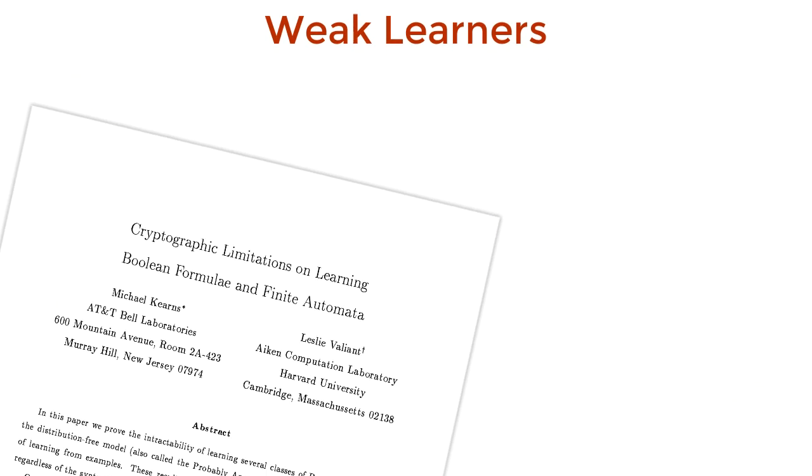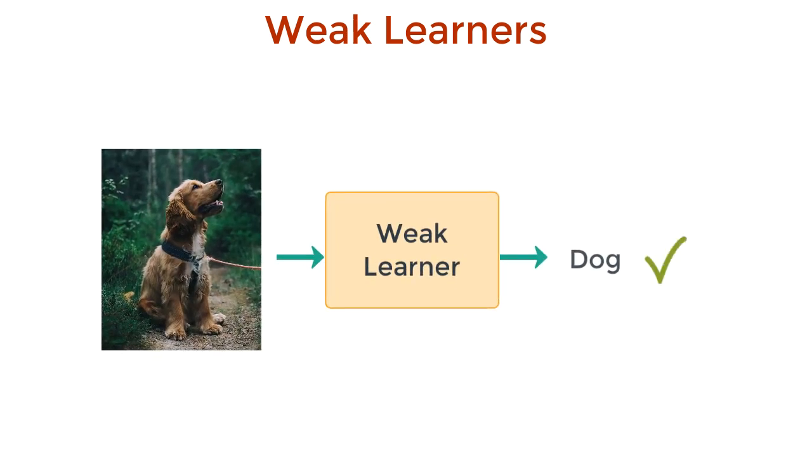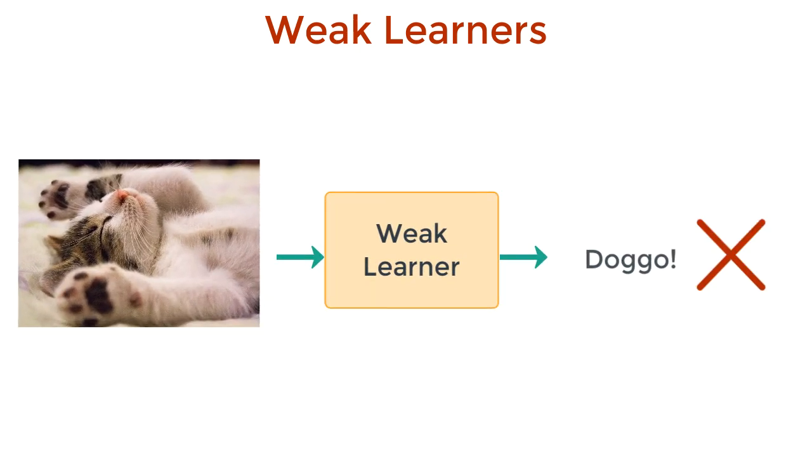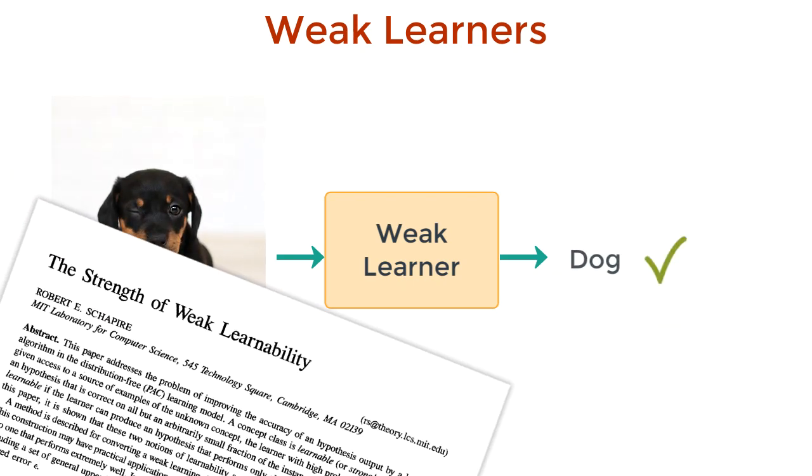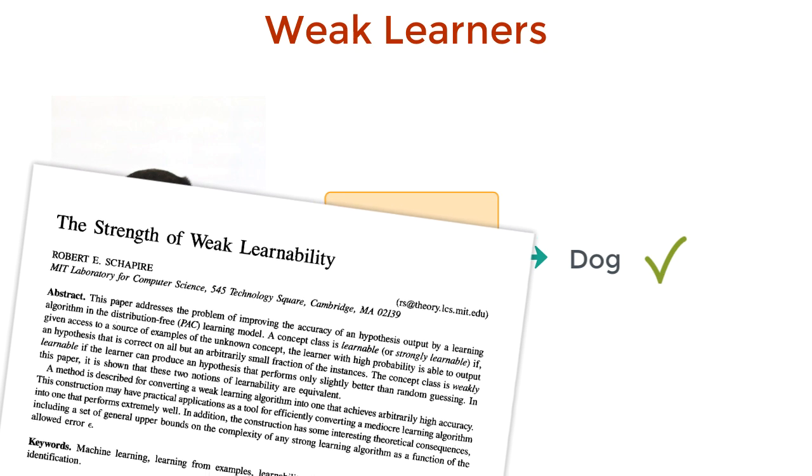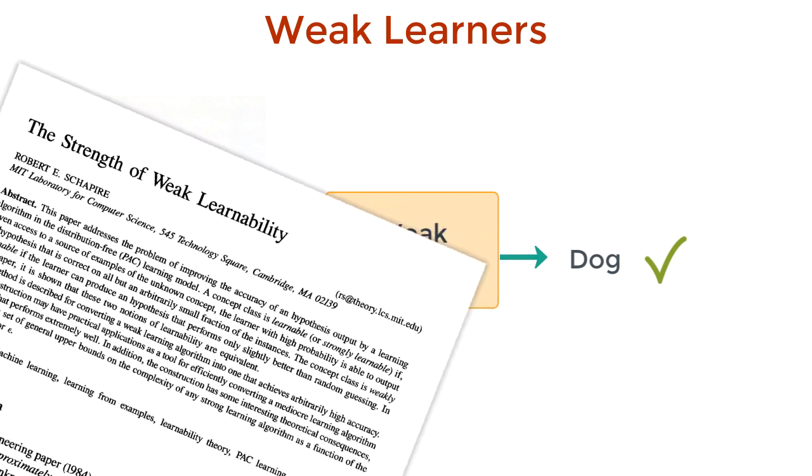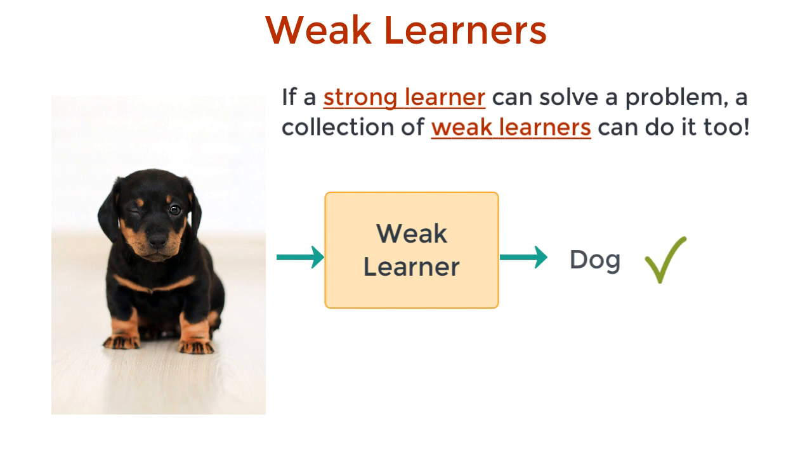A 1988 paper by researchers Michael Kearns and Leslie Valiant defined weak learners as algorithms that performed just slightly better than random guessing. Shortly after, in 1990, another researcher, Robert Schapire, illustrated the powers of these weak learners in his paper, The Strength of Weak Learnability. The main takeaway of this paper was that if a problem can be solved by a strong learner, then a weak learner should be able to do it too in some way. They showed this by introducing a technique called hypothesis-boosting mechanism.